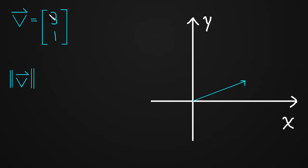So going back to our vector v, we have its x component is 3 and its y component is 1. So that simply means we've moved over 3 in the x direction and up 1 in the y direction. And now we've formed a right triangle. And it turns out that the length of this vector is just the hypotenuse of this triangle.